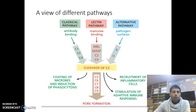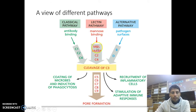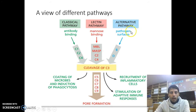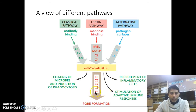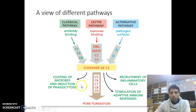Here we can see another view of the different pathways. On the classical pathway, after antibody binding, C1, C2, and C4 bind with that and eventually activate complement protein C3. On the lectin pathway, mannose-binding MBL, MASP, C2, and C4 also eventually activate C3. On the alternative pathway, Factor D, Factor B, and Properdin on the pathogen surface also activate complement protein C3. Complement protein C3, with the help of other higher complement proteins, helps phagocytosis, recruitment of inflammatory cells, and stimulation of adaptive humoral responses.